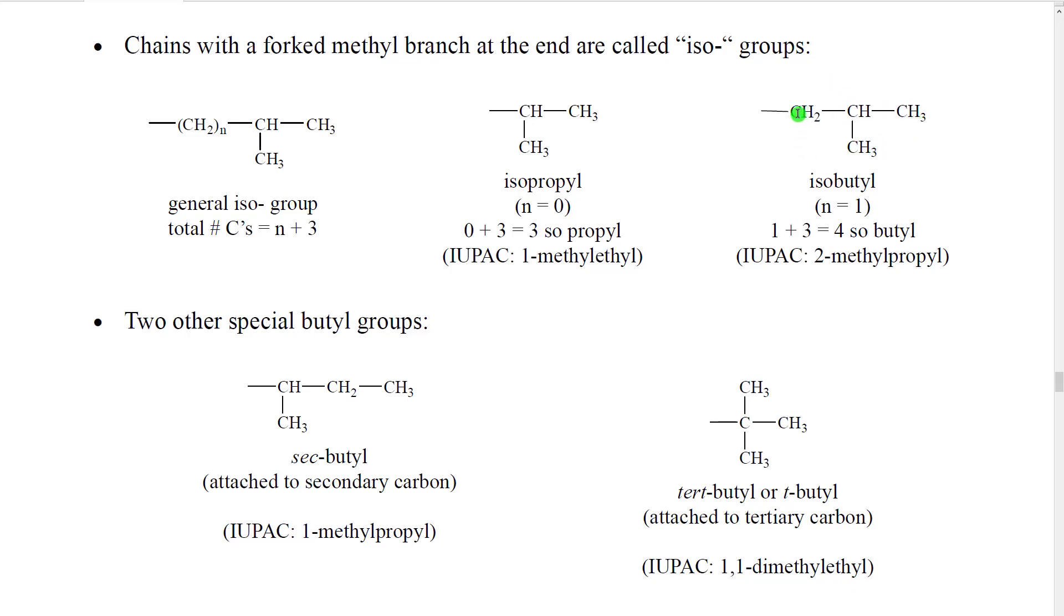Notice also how we are attached directly to the CH2, not directly to the iso itself. And so on. So we could essentially generate infinite different iso substituents just by changing the number of CH2s. But typically we don't really go above two CH2s, which would be five total carbons. So isopentyl. So isopentyl is a thing. It's not used very often anymore, but it is a thing.